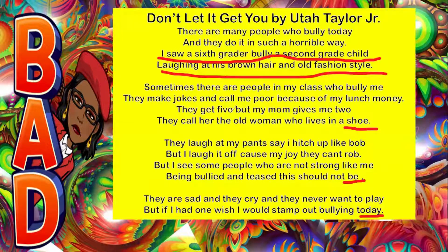Four stanzas in total. And how many lines does it have? Counting through: one, two, three, four, five, six, seven, eight — fourteen lines. So if you are asked how many lines 'Don't Let It Get You' consists of, it consists of 14 lines.